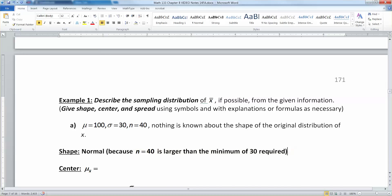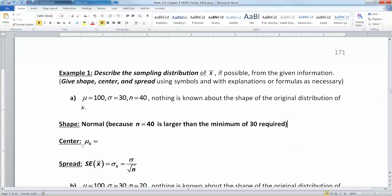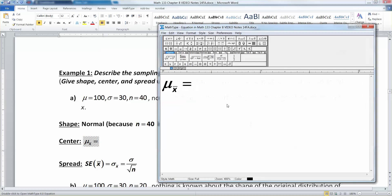We're going to write out why: because n equals 40 is larger than the minimum of 30 required. Now we know it's normal. Then we can figure out its center. Remember that the center is equal to the mean, which in this case was equal to 100. So there's our center, it's 100.